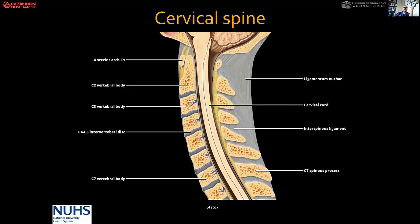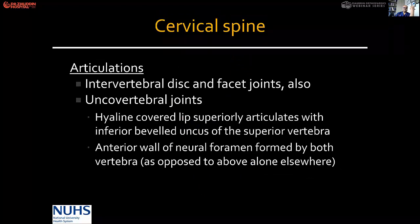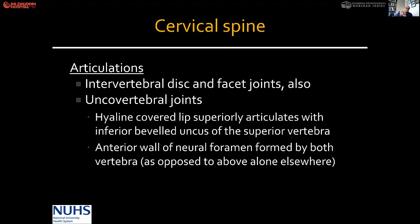You can see the anterior arch of C1, the posterior vertebral body, then the subaxial vertebral bodies, the cord, and the spinous processes. The articulation in the cervical spine, as anywhere in the lumbar and thoracic spine, comes through the intervertebral disc and the facet joints. The cervical spine is the only one with uncovertebral joints — not present in thoracic and lumbar spine.